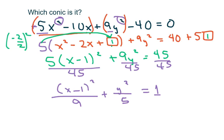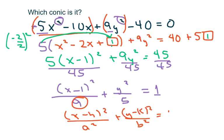It basically has the form x minus h squared over a squared. This is the bigger number. Plus y minus k squared over b squared equals 1. Alright? And let me write it on the next page. So we have again, x minus 1 squared over 9 plus y squared over 5 equals 1.